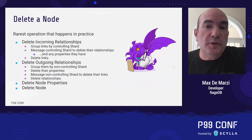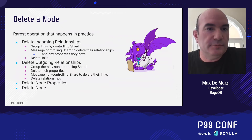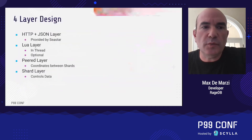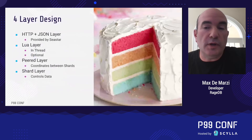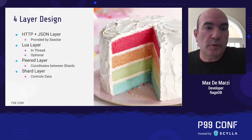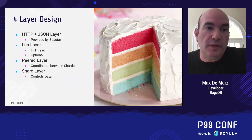RageDB is built on a simple four-layer design. On the surface you have HTTP and JSON, already provided by Seastar. Underneath that is an optional Lua layer running in a single thread — you can assign Lua code or use the straight HTTP API. Both of these sit on top of the peered layer, which acts as a coordinator between the shards. At the bottom is the actual shard layer, which controls the data you're asking for.